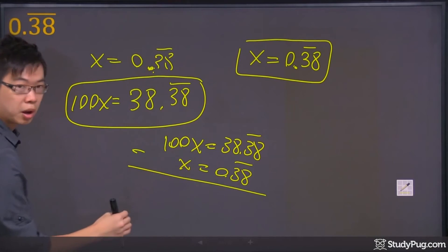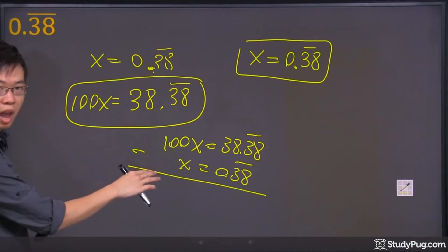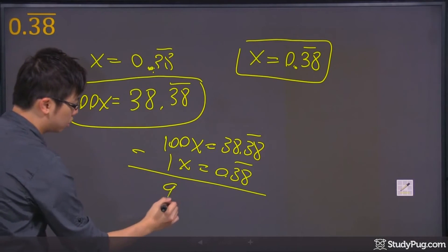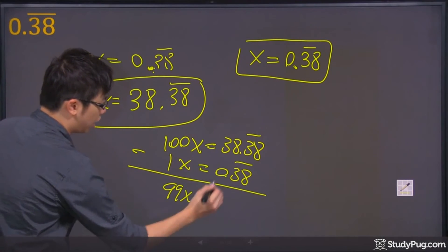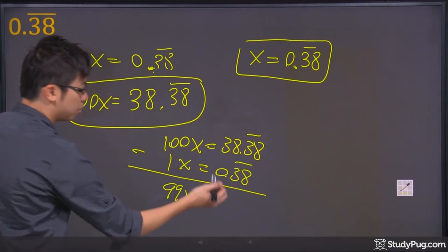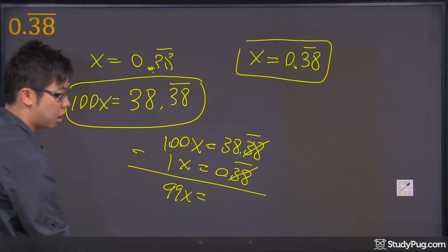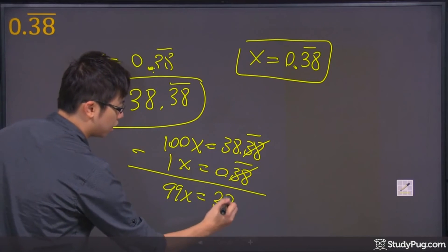The top minus the bottom. So 100x minus the x, this is just a 1, right? So it's 99x. And the 38.38 minus the 0.38. The 38 are going to cancel. It's just going to be 38.